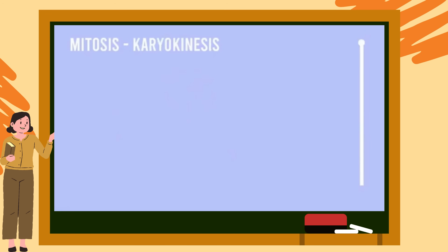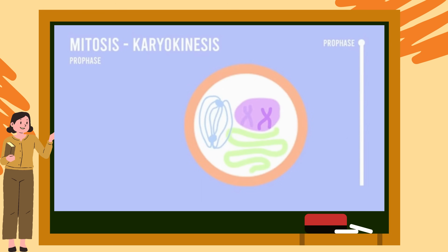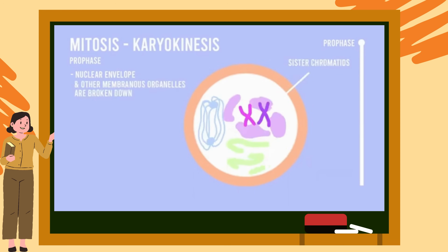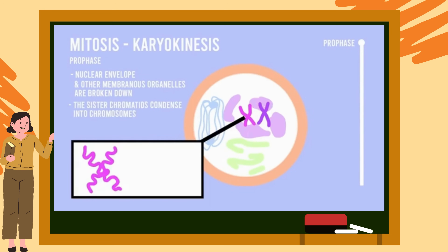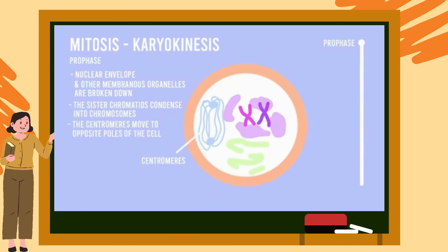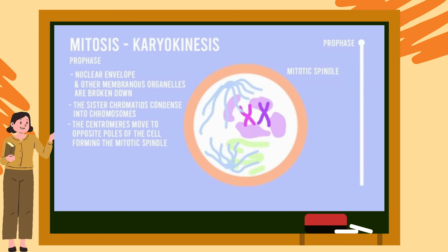The first and longest step of karyokinesis is known as prophase. During prophase, the nuclear envelope and other membranous organelles such as the Golgi apparatus are broken down. Furthermore, the sister chromatids condense and coil into denser structures known as chromosomes, which become fully visible under a microscope. The centrosomes also move to opposite poles of the cell, forming a microtubule structure known as the mitotic spindle.